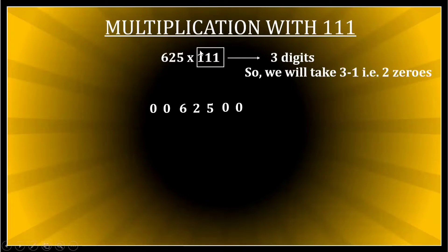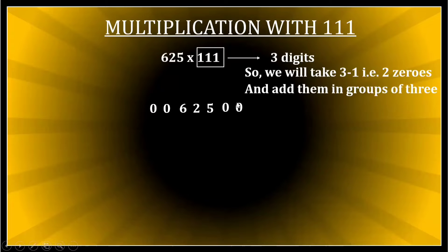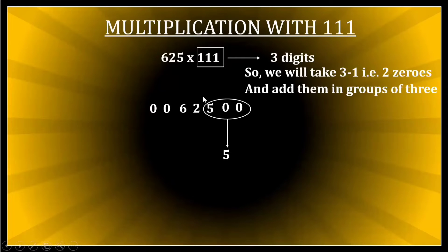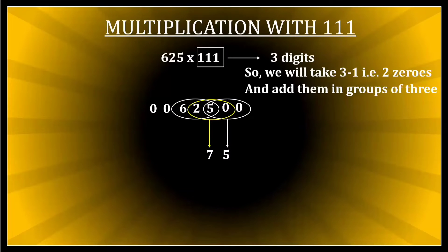Because there are three digits, I will add the numbers in groups of three. Starting from the left: zero, zero, five — first three digits — add them to get 5. That is my first digit. Next three digits: zero, five, two — zero plus five is five, plus two is seven — so 7 is my second digit. Next set: five, two, six — five plus two is seven, plus six is thirteen — so 13 is my third group result.